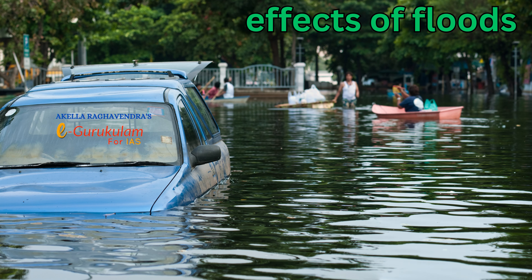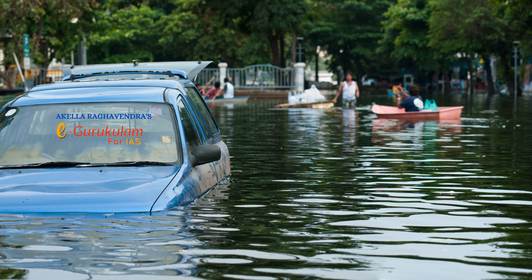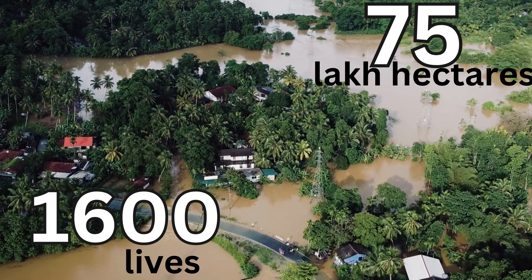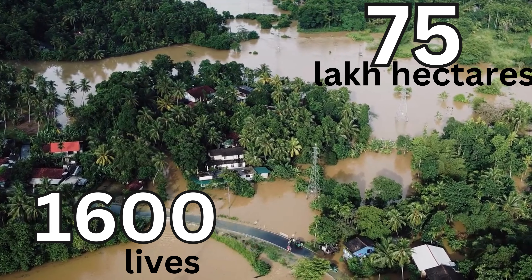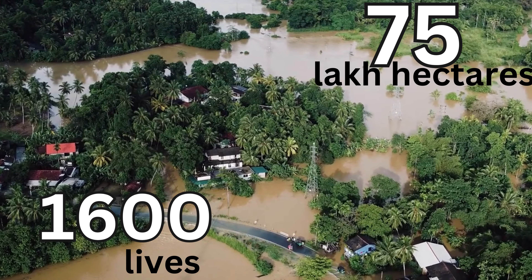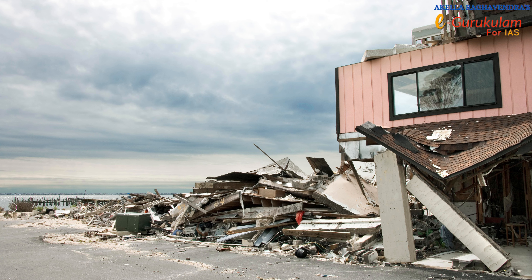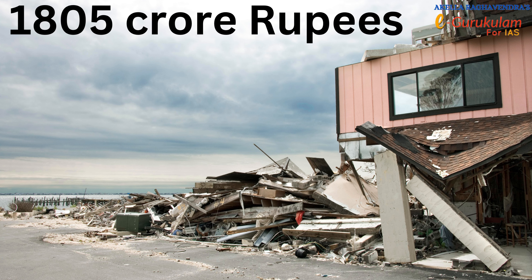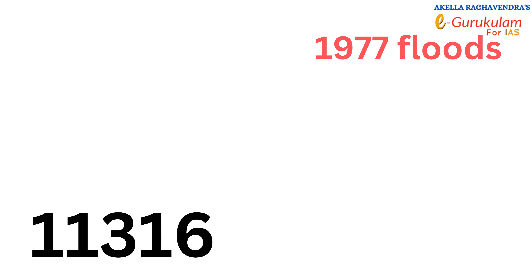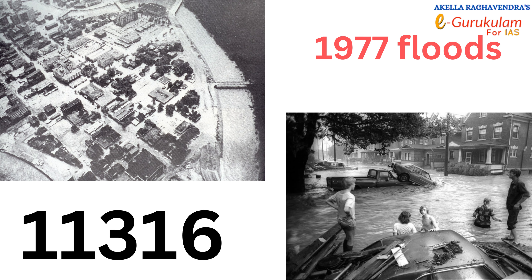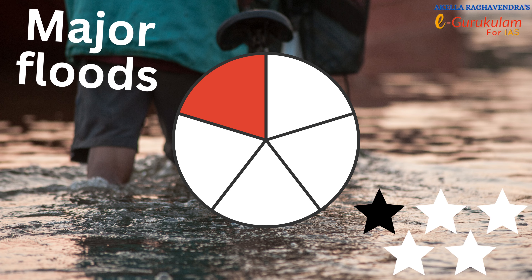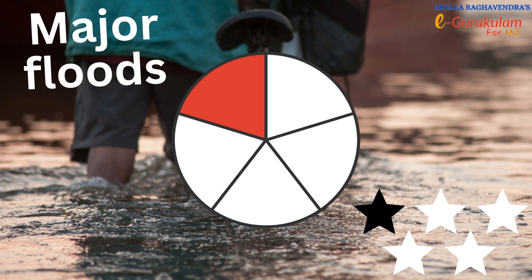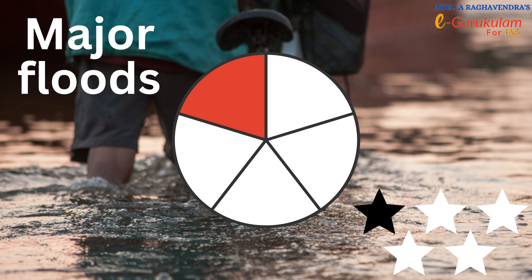Under Human Factors, 75 lakh hectares of land is affected and 1,600 lives are lost on average. The damage cost to crops, houses, and public utilities is Rs. 1,805 crores. The maximum number of lives lost, 11,316, was in the year 1977. The frequency of major floods is more than once in five years.